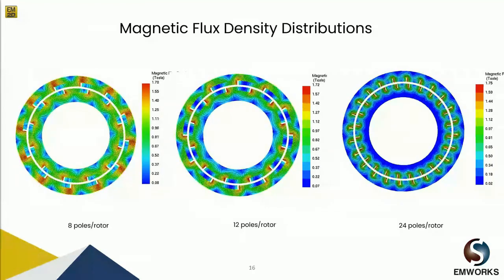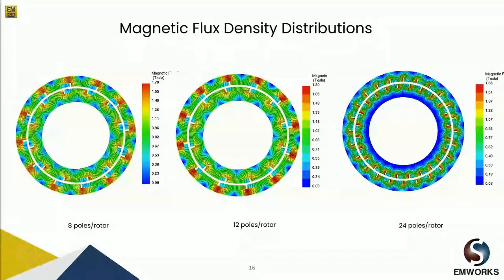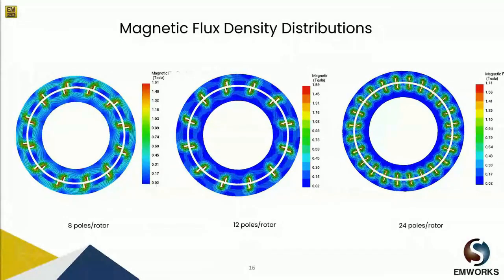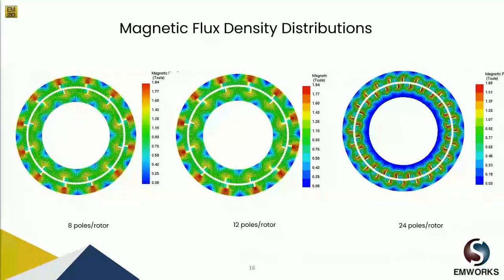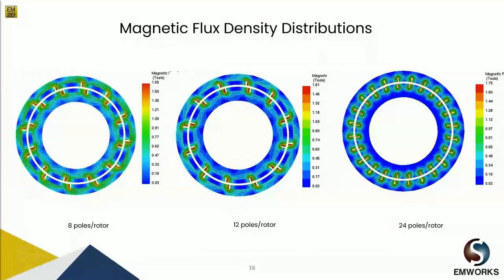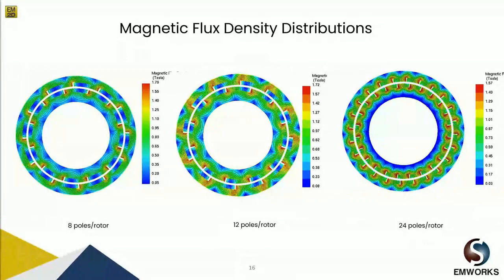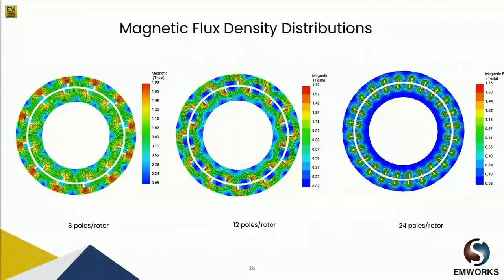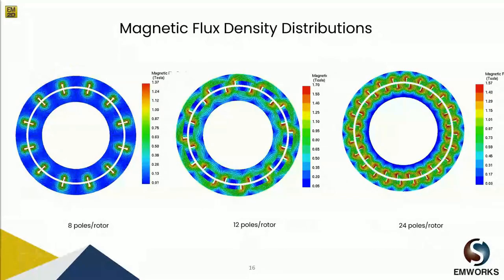These are animations of the magnetic flux results for the 8-pole, 12-pole, and 24-pole configurations. These post-processing options help you see how the field is distributed and how it changes while rotating different components, or when you change the shape of your application — observing the impact on field plots, current distribution, losses, and so on.